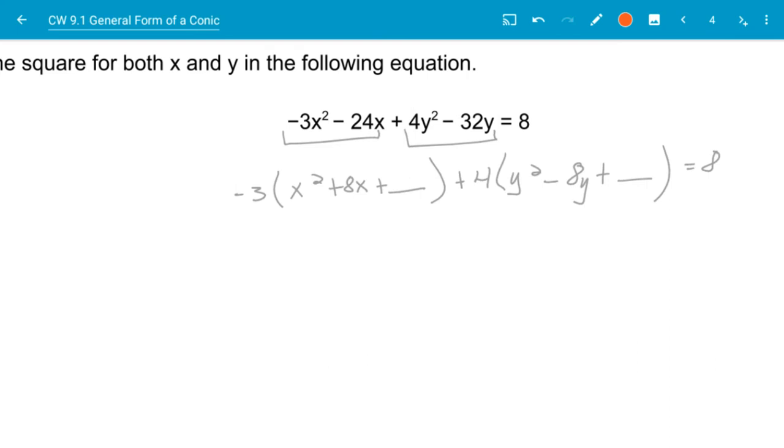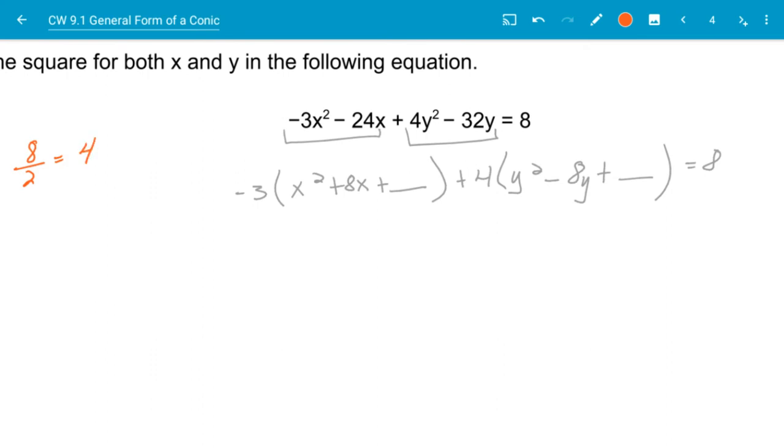So let's complete the square for the first one. Now, I'm going to take that middle number, that 8. I'm going to divide it by 2. Then that will give me 4. I square that number. So I'm going to add 16 to both sides. Now, I have to take that 16 and multiply it by a negative 3. So negative 3 times 16 is a negative 48. So in essence, I've multiplied right here. I've added in a negative 48. So I have to add in the negative 48 to the other side.